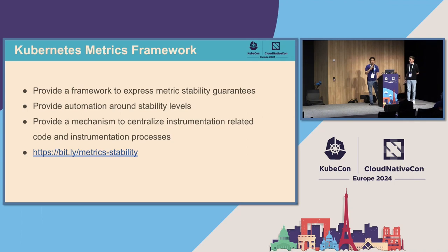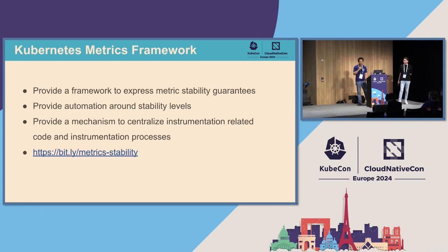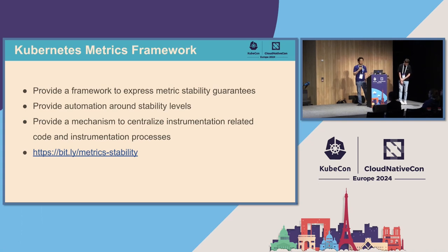So we started working on this thing called the metrics framework. You don't want your charts to stop working on some minor version boundary — if the schema changes, you have to rewrite your alerts, which would be a pain. In Kubernetes, we really strive for compatibility across versions. Instead, we decided to make metrics an API. We wrapped the Prometheus libraries and annotated metrics with a stability level. We built a static analysis framework that basically ensures people are not mutating metrics or breaking their contracts, so that your charts and alerts will continue to function across minor version boundaries.